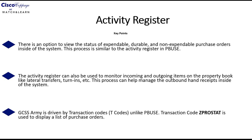The second key point is that the Activity Register can also be used to monitor incoming and outgoing items on the property book or primary hand receipt. You can view lateral transfers, turn-ins, etc. This process can help manage the outbound hand receipts inside of the system, so that you can track all the items that are designated to leave your primary hand receipt.